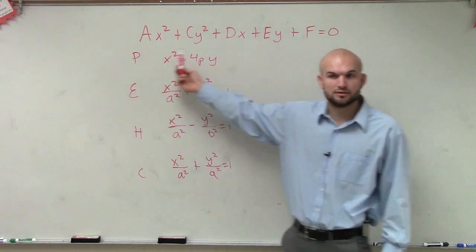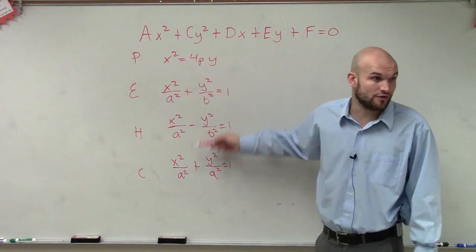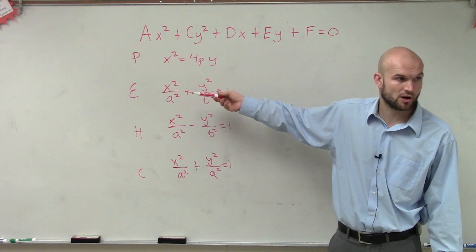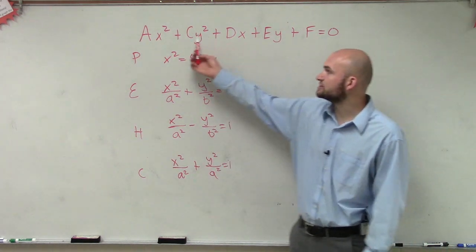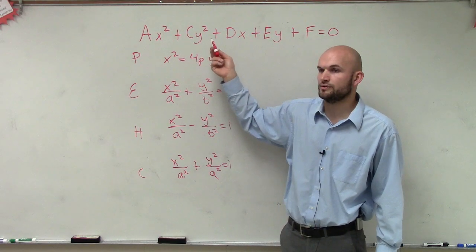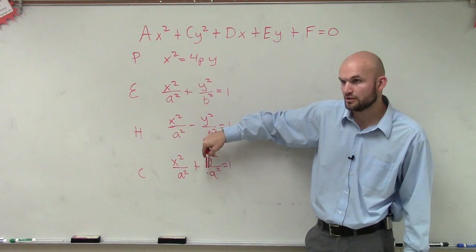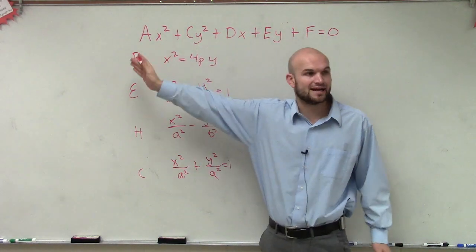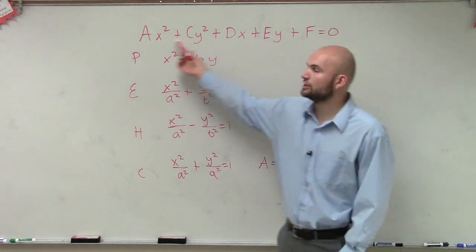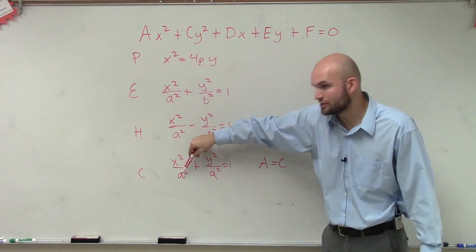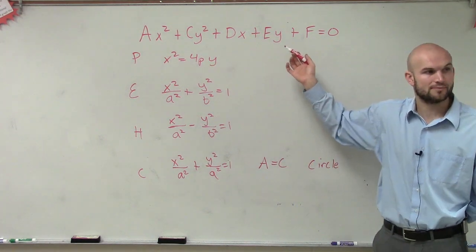So if I gave you an equation in this general form, how could you determine if it was a parabola, an ellipse, a hyperbola, or a circle? You could convert it to each one of these formulas, or there's a little test we can look at. We're going to look at the coefficients of our x squared and our y squared. The coefficient of x squared is 1 over a squared, and for y it's also 1 over a squared. If the coefficients of x squared and y squared are exactly the same — meaning if a is equal to c — then you know you have a circle.